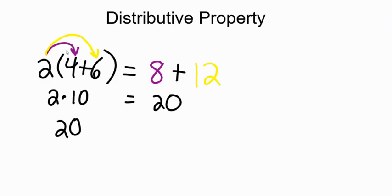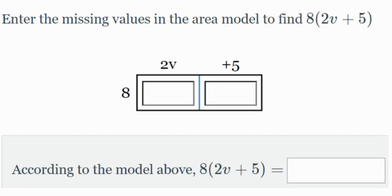And we'll go through three quick examples of kind of a way to organize this process, other than the arrows. If you like the arrows, you can do that too. But let's give these just a quick little try here. So enter the missing values in the area model to find 8, and in parentheses, 2v plus 5.